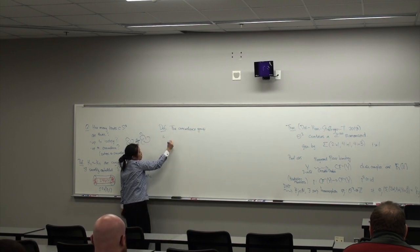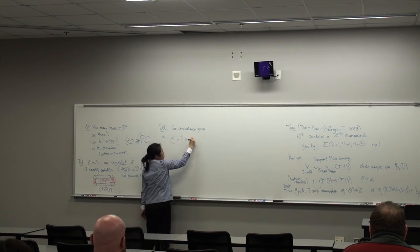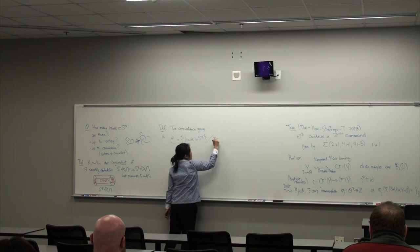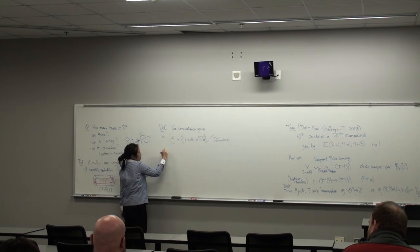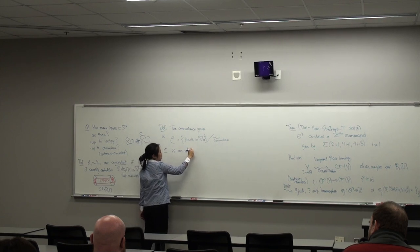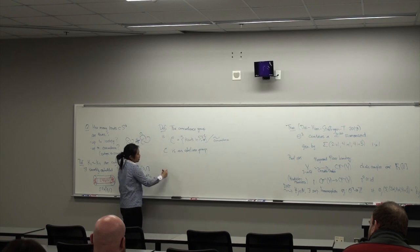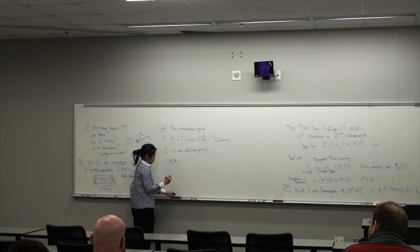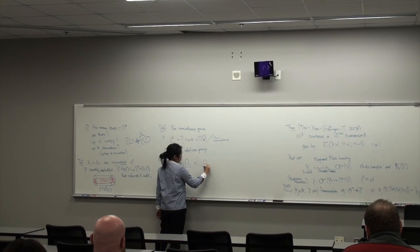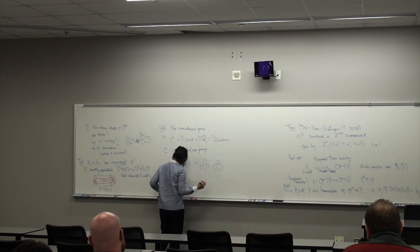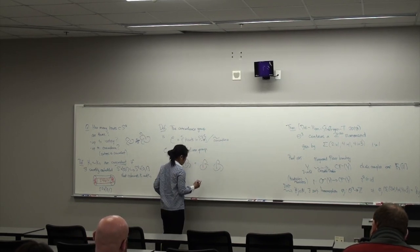Another advantage of considering knots up to concordance is that we get a group structure. The concordance group is defined as the set of knots in S³ up to concordance, where the group operation is connected sum — this is an abelian group. The connected sum of two knots K₁ and K₂ is formed by deleting a small interval from each knot and joining them with two strands.